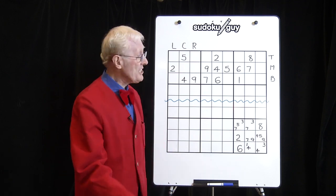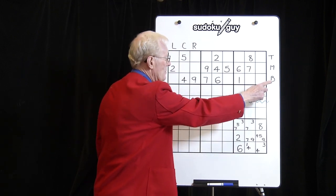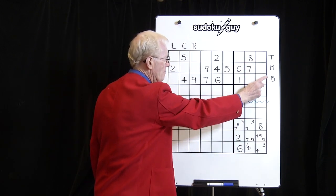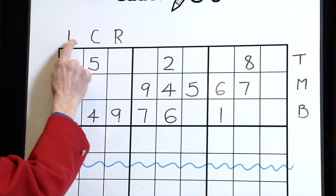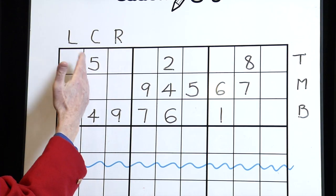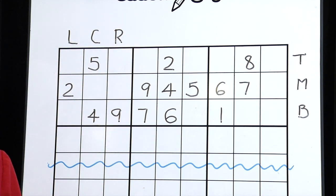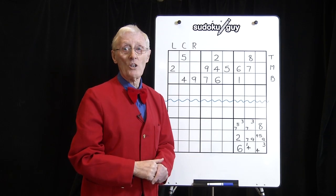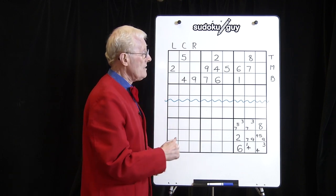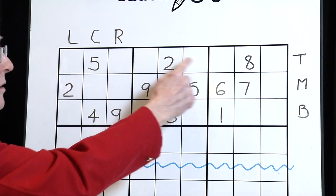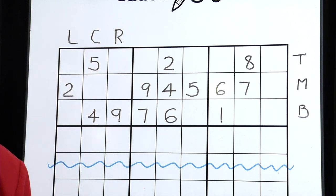What we did in the last sessions was that we learned about TMB, which means top, middle, bottom rows of these three blocks. We learned about LCR meaning left, center, and right of these three blocks, and by doing that system we learned how to get lots of new numbers. Then we learned how to look for a row, a column, or a block with only two cells left.